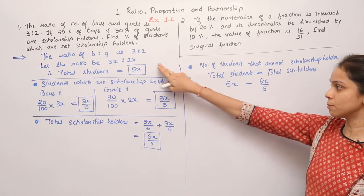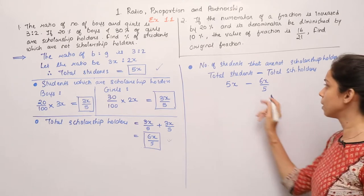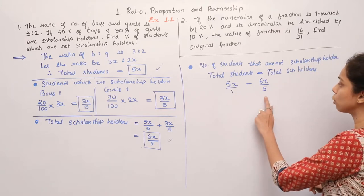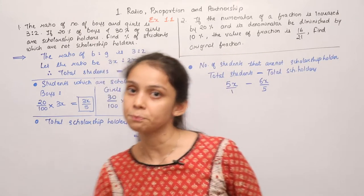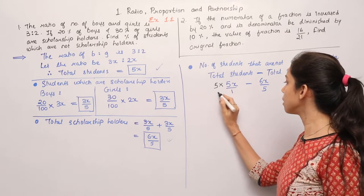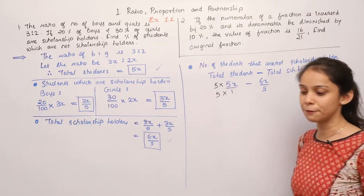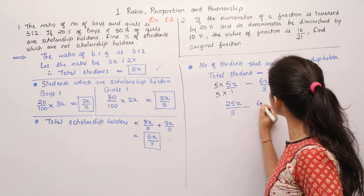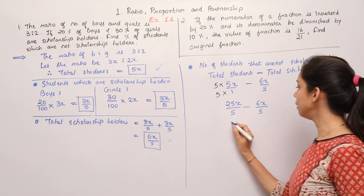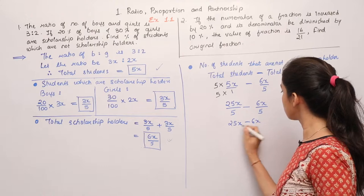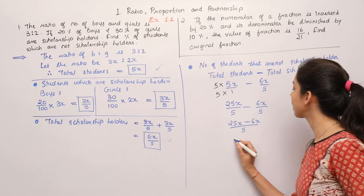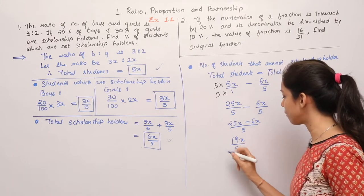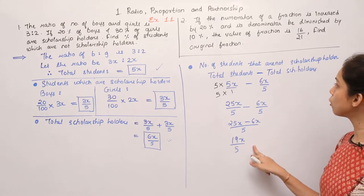Since 5x cannot be directly subtracted from 6x upon 5, we write 5x as 5x upon 1, then take LCM. Multiply numerator and denominator of 5x by 5 to get 25x upon 5. So we have 25x upon 5 minus 6x upon 5. Taking LCM: 25x minus 6x upon 5 gives 19x upon 5.